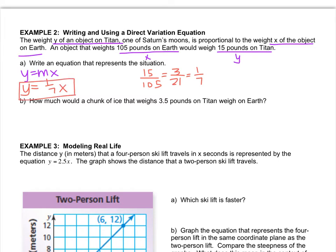Let's move on to letter b. How much would a chunk of ice that weighs 3.5 pounds on Titan weigh on Earth? Remember, Titan is the y, and Earth is the x. What I'm going to do is take 3.5, plug it in the y spot, and then just see what I get. So I get 3.5 equals one-seventh x.